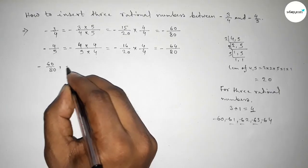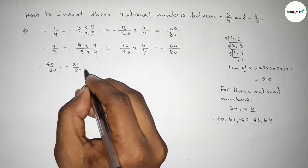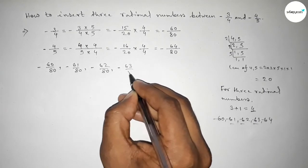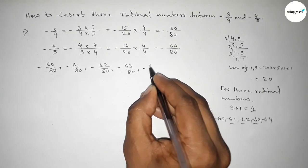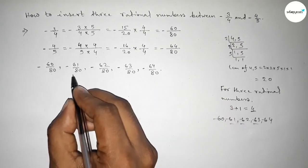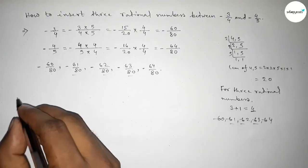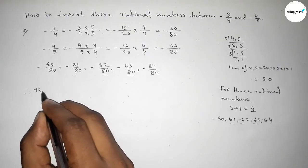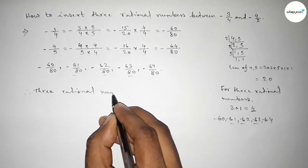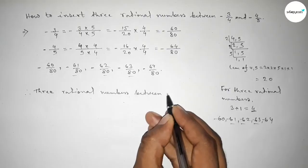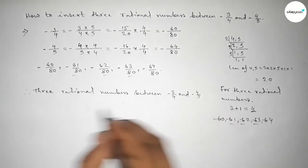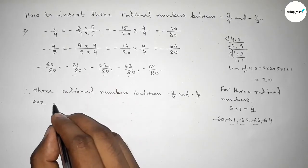First, so here: -60/80, -61/80, -62/80, -63/80, and last -64/80. And among these, these are the three required rational numbers.